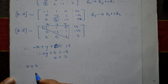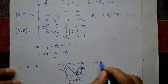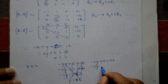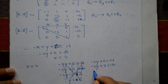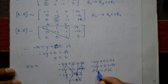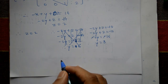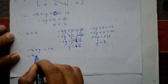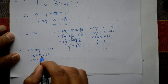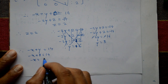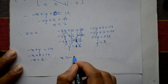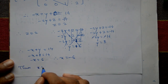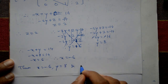Therefore, z equals 2. Substituting into minus 2y plus z equals minus 14: minus 2y plus 2 equals minus 14, so minus 2y equals minus 16, and y equals 8. Now substituting y into minus x plus y equals 14: minus x plus 8 equals 14, so minus x equals 6, therefore x equals minus 6.